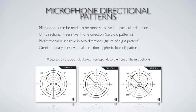The next type is bidirectional — bi meaning two. It has a pattern called a figure-of-eight because it looks like a figure eight. It's sensitive at zero and also equally sensitive at 180 degrees, so the front and back are very sensitive, but at the sides there's almost no sensitivity. It rejects sound from the side but picks up from front and back. We can also make microphones equally sensitive in all directions — that pattern is called omni, meaning all.